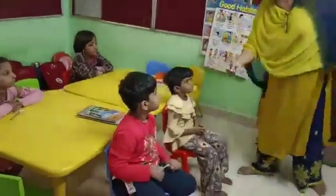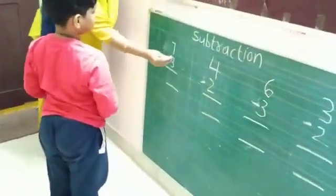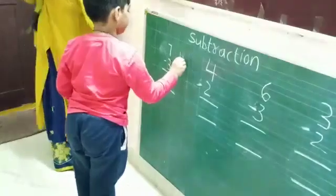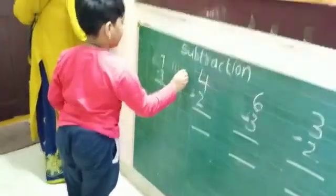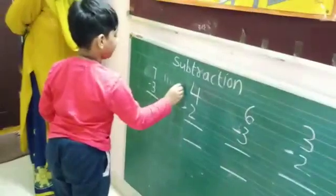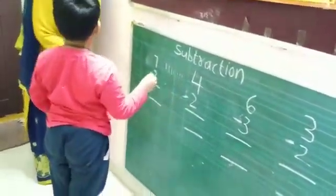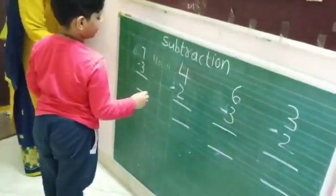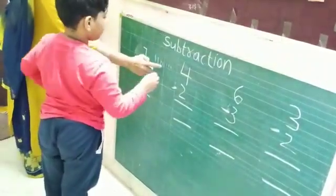Come, Ashika. What is this number? Seven. Draw seven lines. One, two, three, four, five, six, seven. How many do you have to take away? Three. Okay, cut three. One, two, three. How many are remaining? Count.